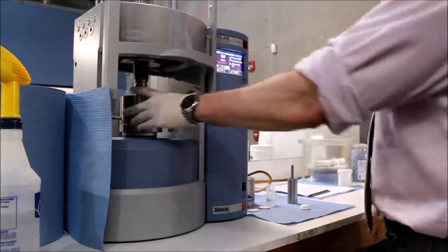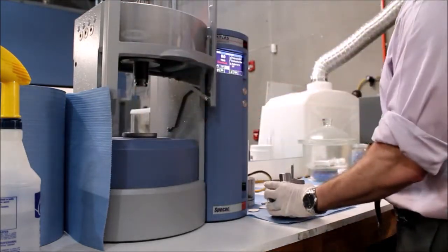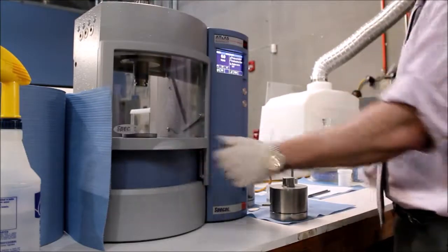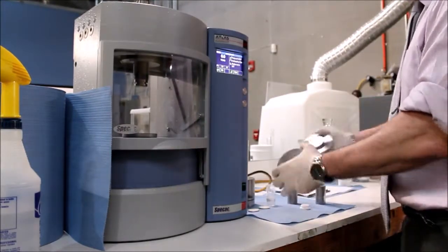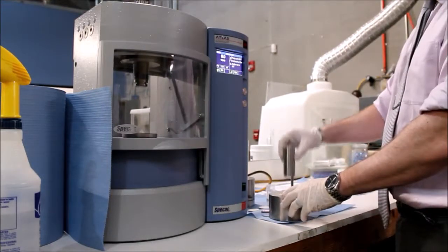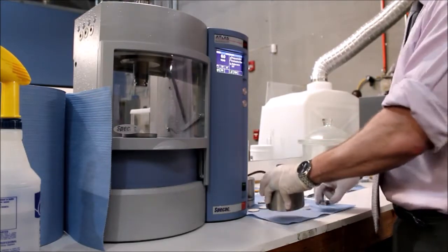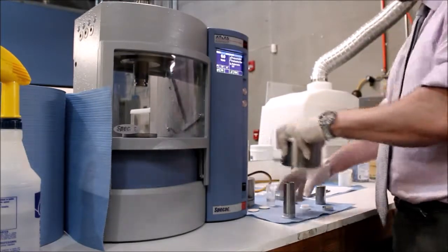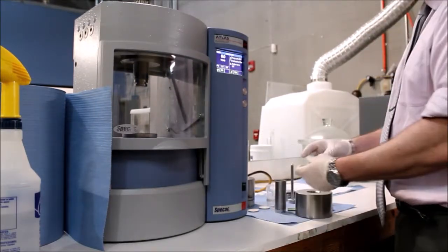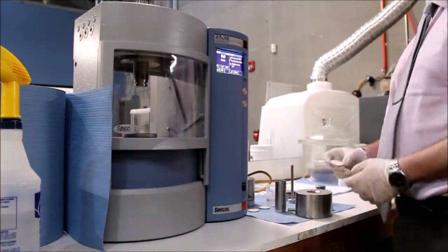From there, remove the die set and remove the plunger from the cylinder. This will then make removal of the base easier. Reinsert the plunger and apply a light load across to remove the pellet. A compacted pellet can now be mounted in the XRF analysis.